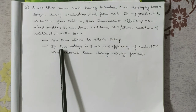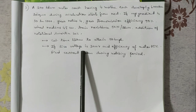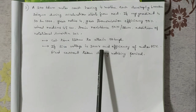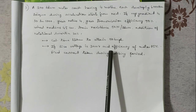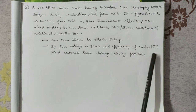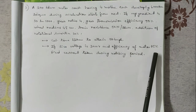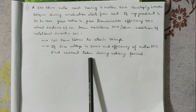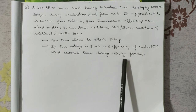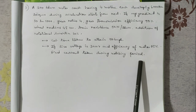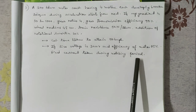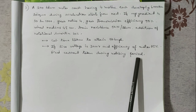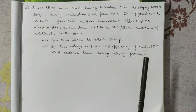If the line voltage is 3000 volts and efficiency of the motor is 85%, find the current taken during the notching period by each motor.